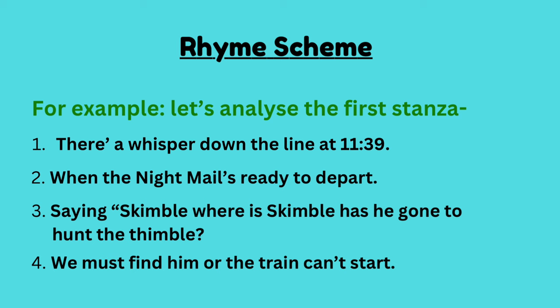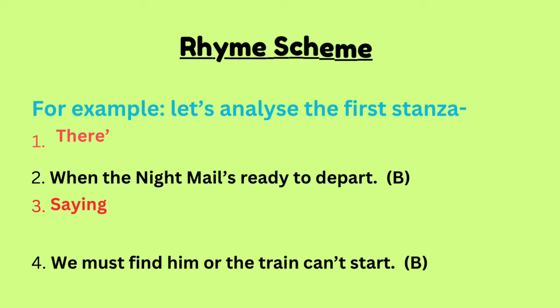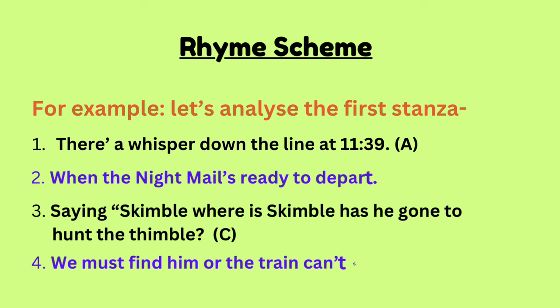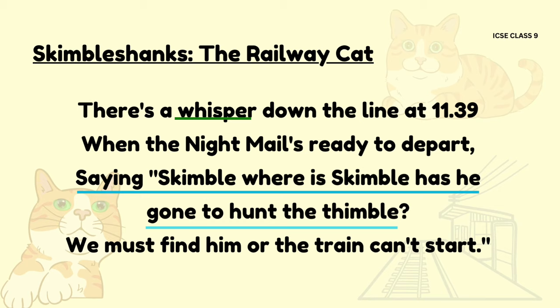There is a whisper down the line at 11:39 when the nightmail is ready to depart, saying Skimble, where is Skimble? Has he gone to hunt the thimble? We must find him or the train can't start. When the first and the third lines do not rhyme, we mark the rhyme structure in these lines as A and C. When these lines rhyme, we mark them as B — for example, the second and the fourth line in this case.